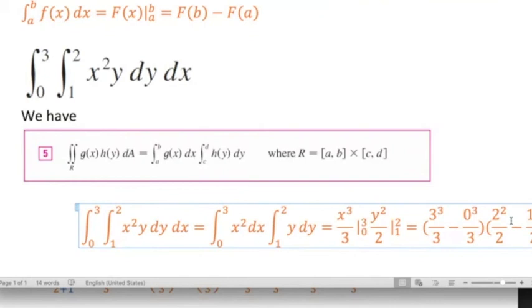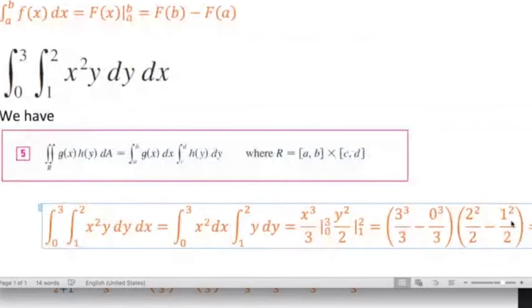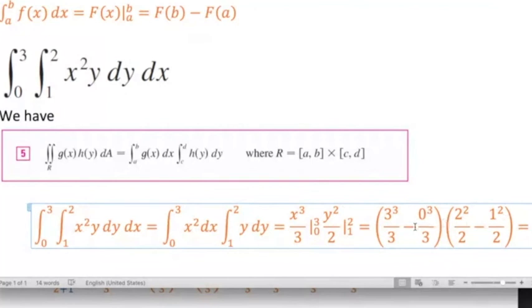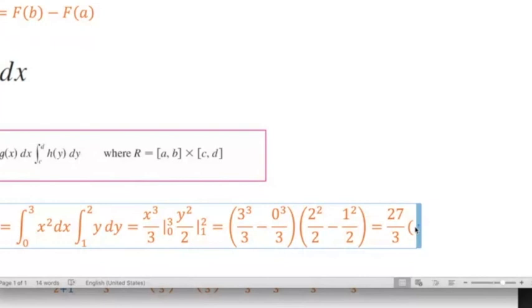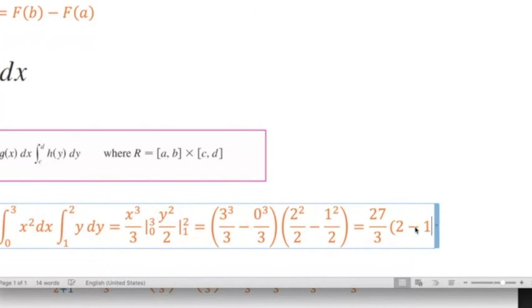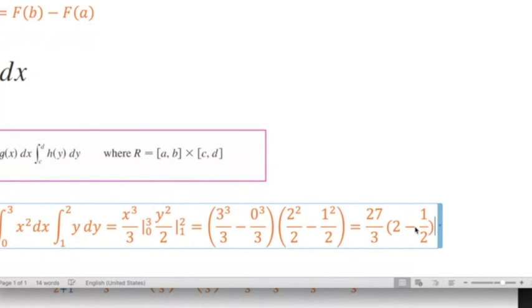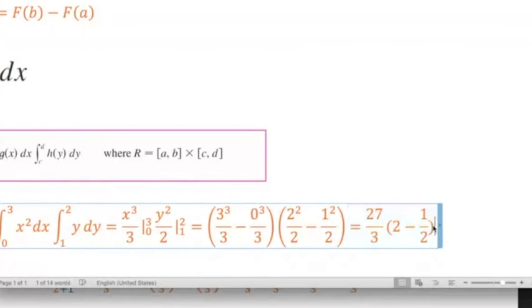So let's calculate this one. The first one gives 27, let me write the equal sign. The first one gives 27 because three cubed is 27 divided by three minus zero, of course we will not write it. The second one is four divided by two is two minus one half. It will be something like this. Two minus half is three over two, which equals 27 times three over two.